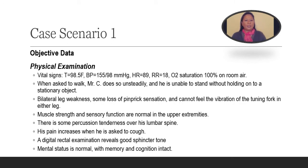Upon Mr. C's physical examination, we note that his vital signs are all stable except for his blood pressure, which is 155 over 98. When we asked Mr. C to walk, he does so unsteadily and he is unable to stand without holding onto a stationary object. We also note that he had bilateral leg weakness, some loss of pinprick sensation, and cannot feel the vibration of the tuning fork in both his legs. His muscle strength and sensory functions are normal to his upper extremities. There is some percussion tenderness over his lumbar spine. His pain increases when he is asked to cough. And when the physician did a digital rectal examination, it revealed good sphincter tone.